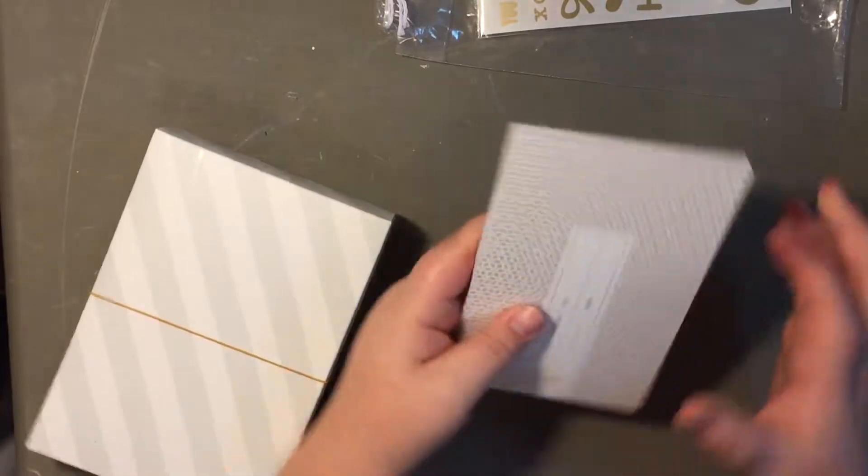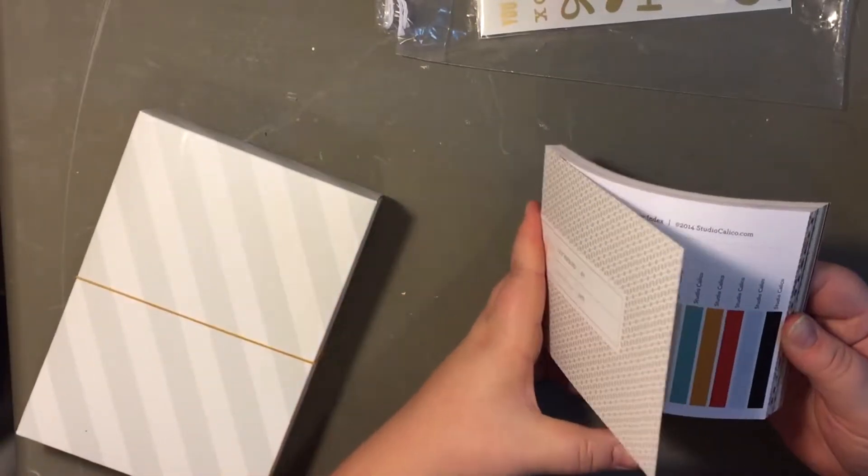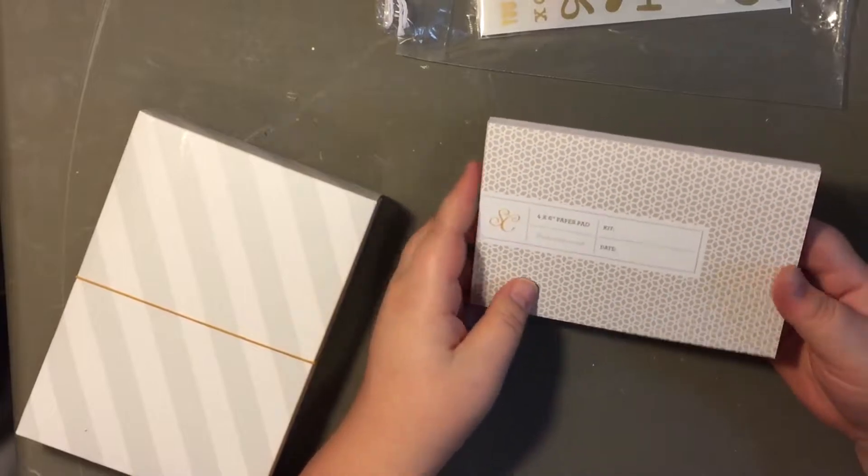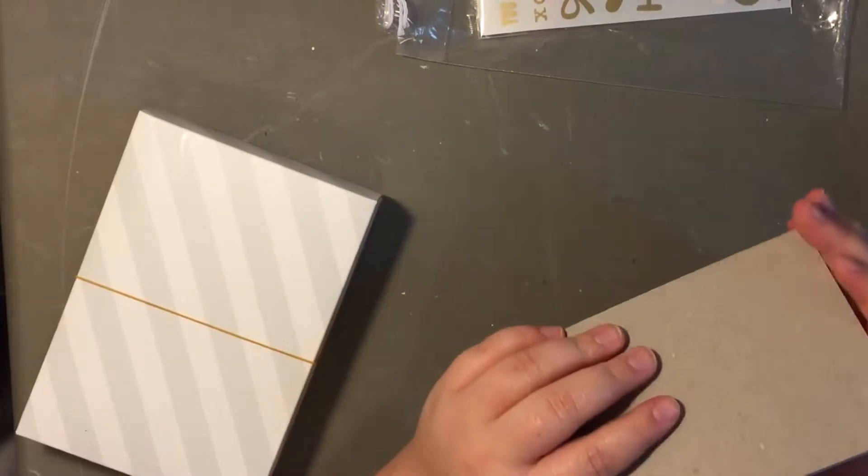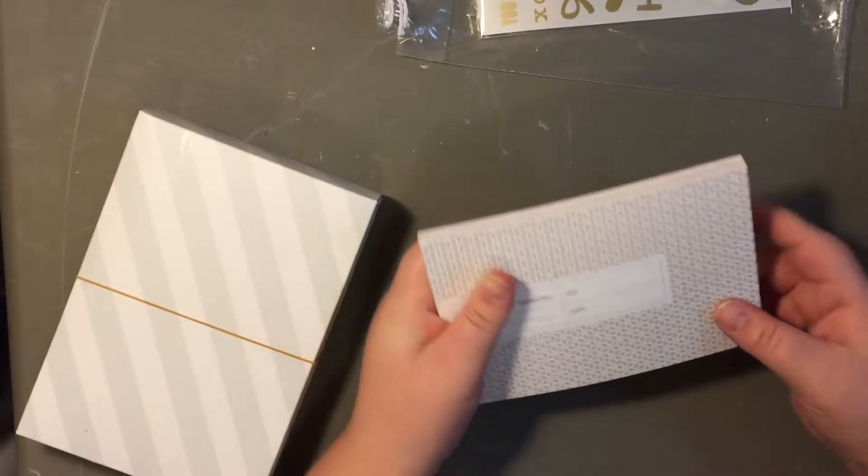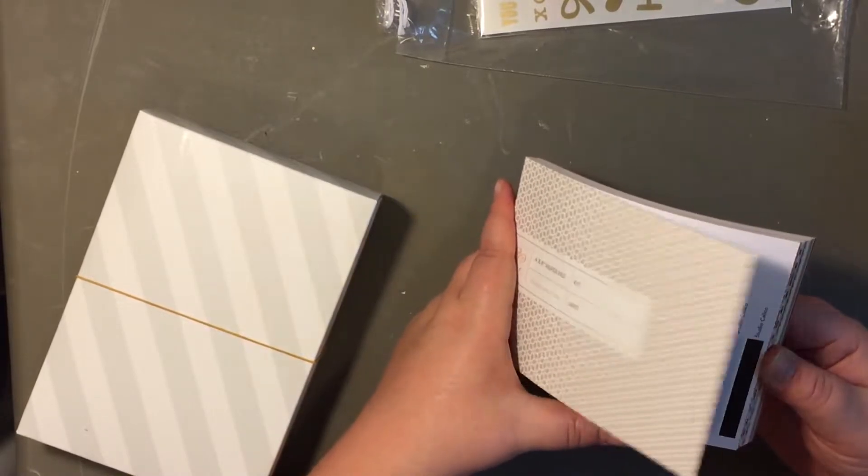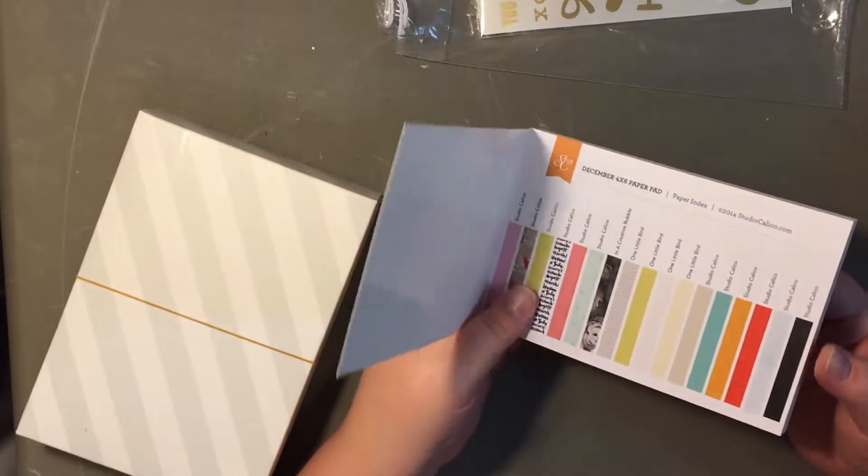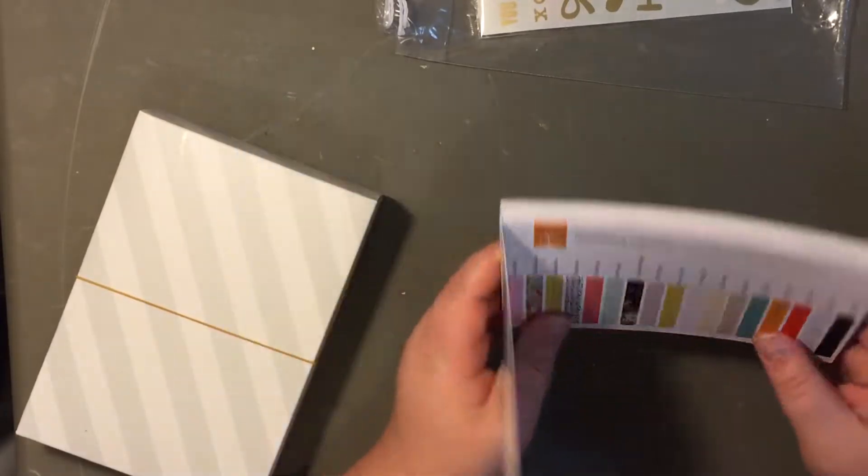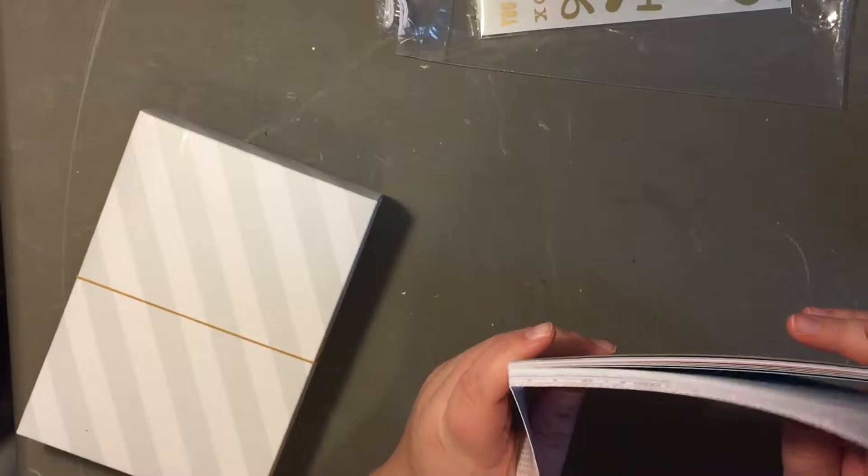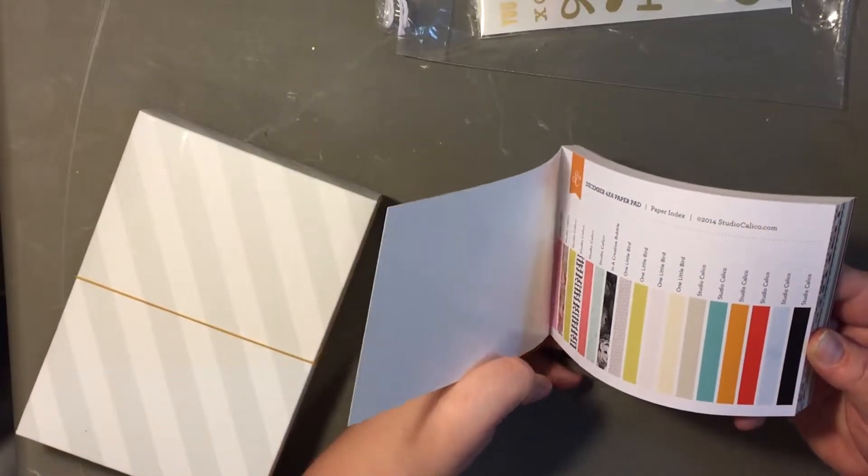And then the 4x6 paper pad. I've really found this useful. But I don't like that it feels like it changes every month. Like some months you get two of each design. Some months you get one of each design. And sometimes the pad's a lot thicker. Like this month it's a lot thicker than it was last month it feels like.